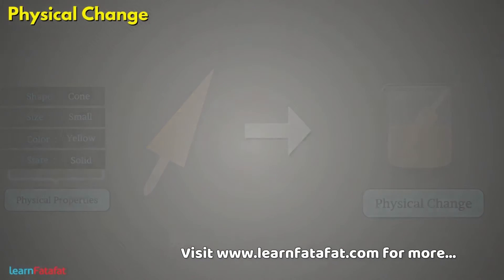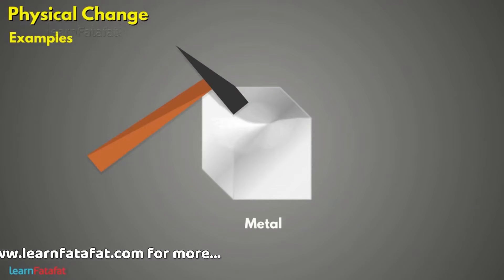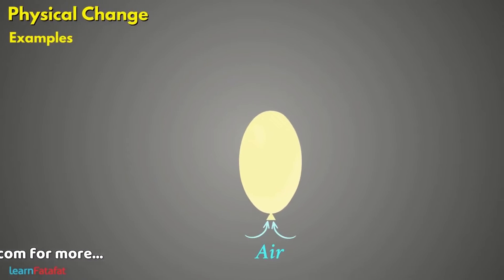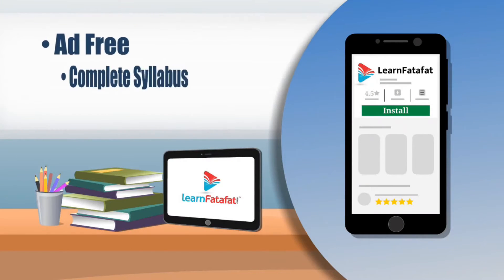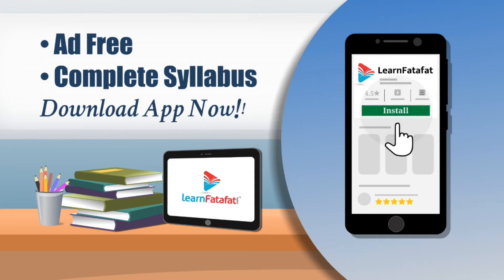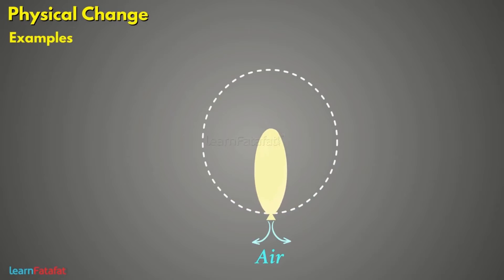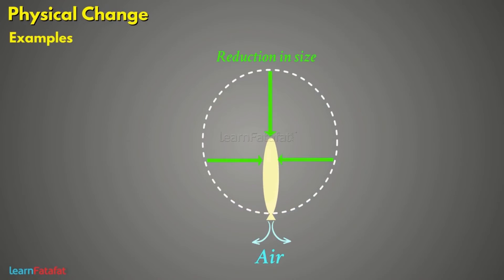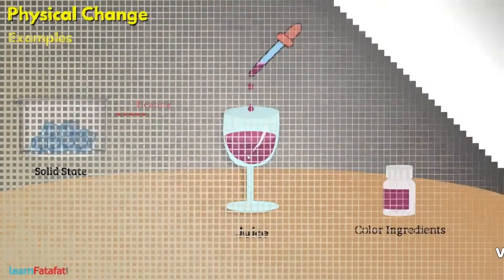For example, if we beat a metal, it changes its shape. Filling air in a balloon causes an increase in its size. However, releasing air from a balloon causes a reduction in its size. We often mix color ingredients to make colored juices.